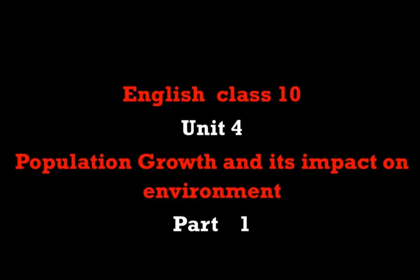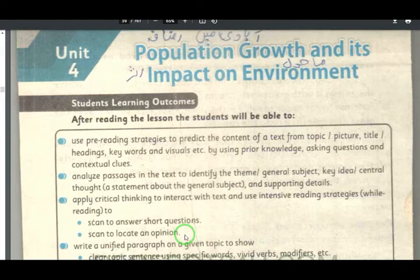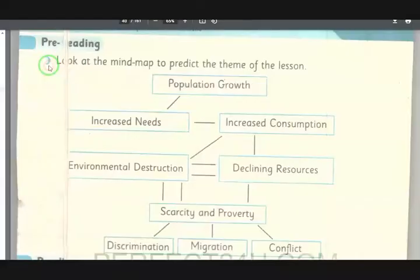In English class 10, unit 4, the title of the lesson is 'Population Growth and Its Impact on the Environment.' Pre-reading: population growth.